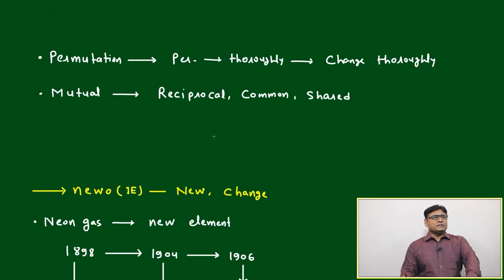It is very easy for commuters who are traveling on a day-to-day basis. Based on the same word has come permutation. This is per means thoroughly, change thoroughly, permutate and permutation.